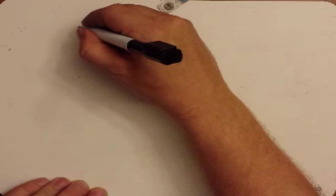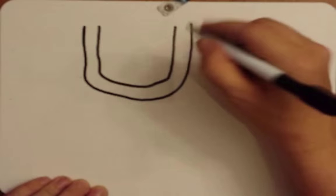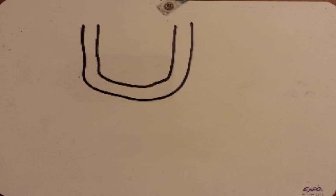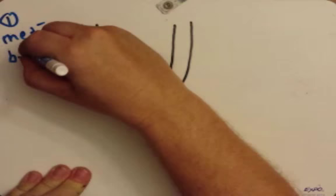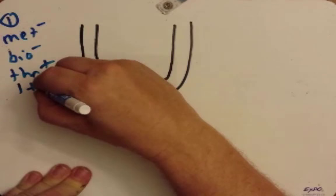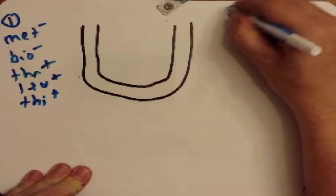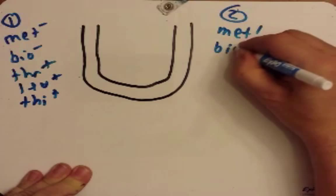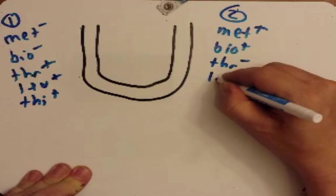This next experiment was done by Bernard Davis in 1950, and he used something called a U-tube apparatus — cleverly named because it's a tube shaped like a U. We know if we allow the two strains to mix, we get prototrophs. So Strain 1 on one side is Met-minus, Biotin-minus, Threonine-plus, Leucine-plus, and Thiamine-plus. Strain 2 on the other side is Met-plus, Biotin-plus, Threonine-minus, Leucine-minus, and Threonine-minus.